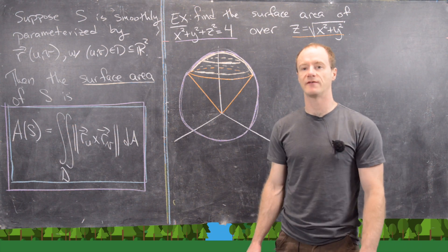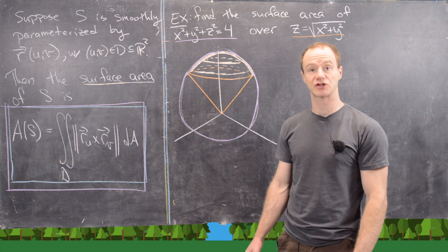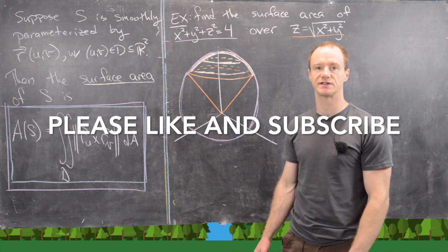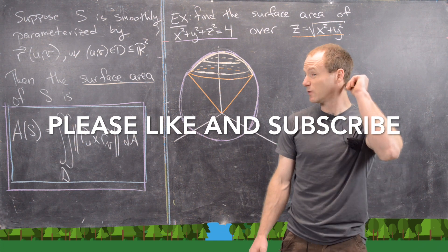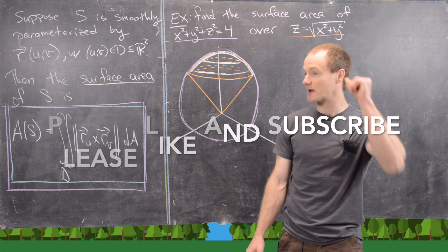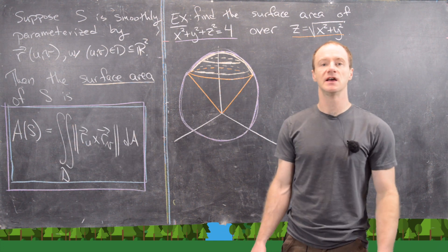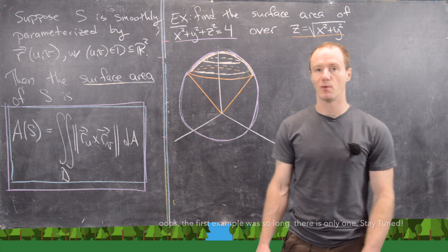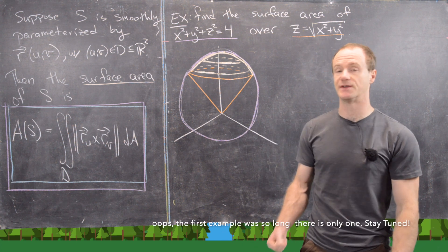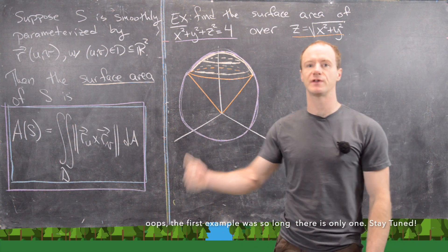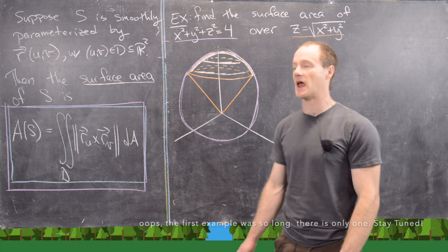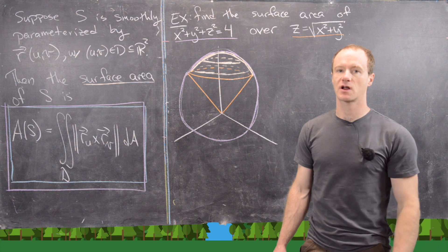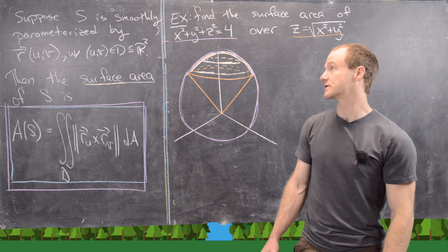In a previous video we derived a formula for the surface area of a parametrized surface. Then we did a simple example of finding the surface area of a sphere. I want to do a couple more examples in this video, but before we do that let's go ahead and recall the outcome of that previous result.